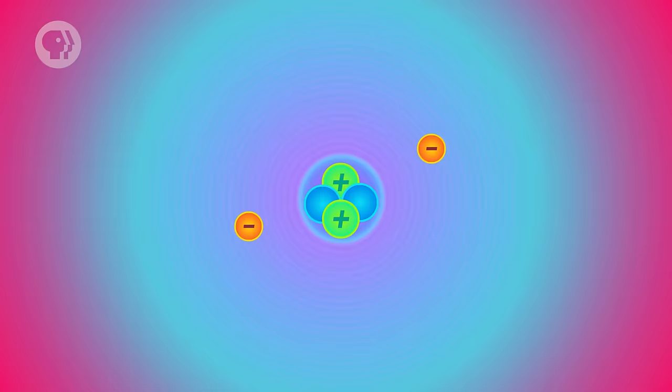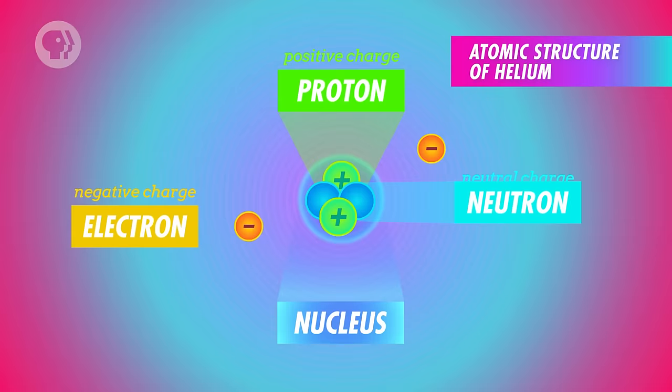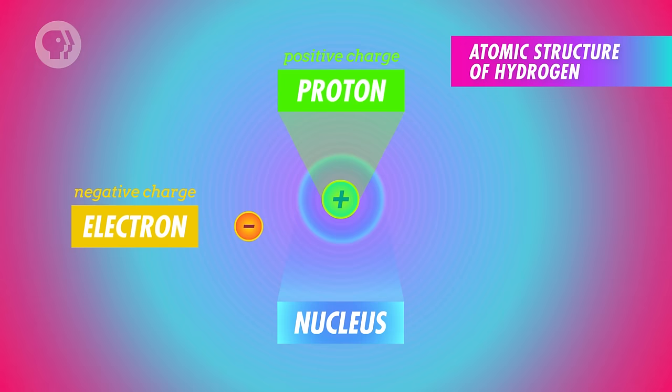Before we can dive into the wonders of nuclear physics, we need to recall a little bit about the thing that makes it all tick — the nucleus. The nucleus of any atom consists of protons and neutrons. The proton is positively charged, while the neutron is electrically neutral, and both particles have nearly the same mass. With the exception of hydrogen, which only has a single proton in its nucleus, every element has both protons and neutrons. Because of this, we'll often refer to the two particles collectively as nucleons.